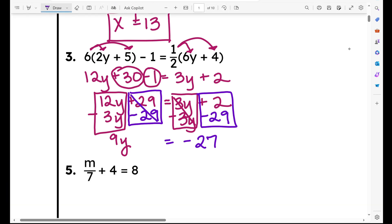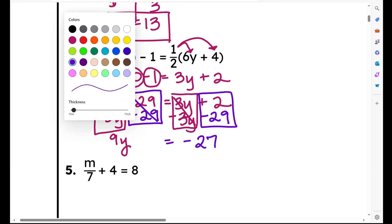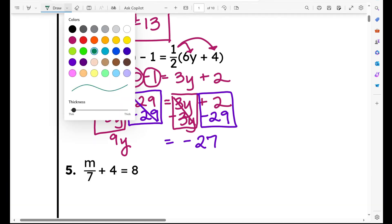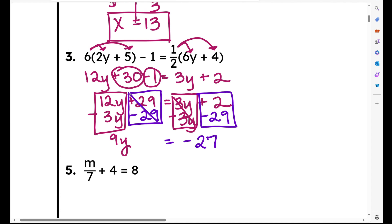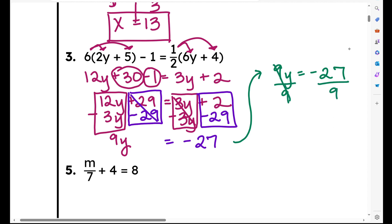I'll rewrite this: 9y equals negative 27. Now I'm going to undo times 9 by dividing by 9. What I do to one side, I have to do to the other. Negative 27 divided by 9 is negative 3. So y equals negative 3 is my answer.